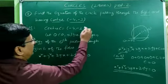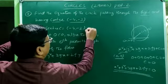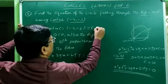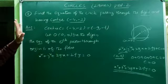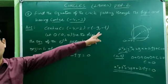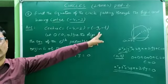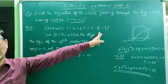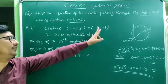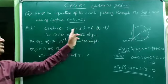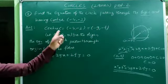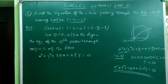Center is (−4, −3). This can be written as (−g, −f). So −g = −4 gives g = 4, and −f = −3 gives f = 3.